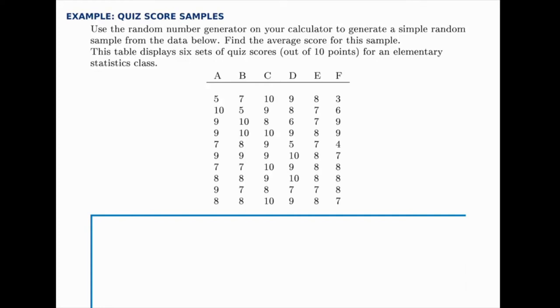In this example we'll see how to select a simple random sample from a population. The population we're given is a set of six quiz scores and there are 10 students. Notice that there are 10 rows here and then each column corresponds to a different quiz, and that makes a total of 60 scores that we have to choose from.